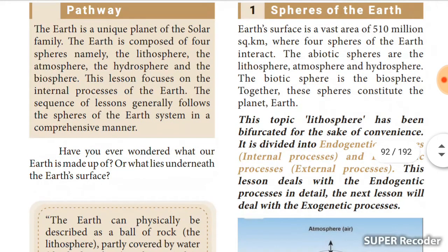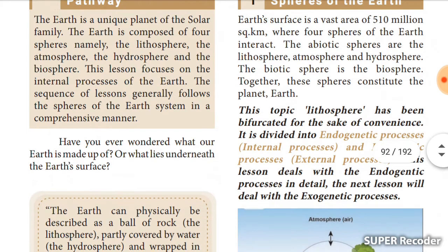The earth's surface is a very vast area of 510 million square kilometers, where the four spheres of the earth interact. The abiotic spheres are the lithosphere, atmosphere, and hydrosphere. The biotic sphere is the biosphere. Together these spheres constitute the planet earth and form it. This topic — the lithosphere — is divided into endogenetic processes (internal) and exogenetic processes (external).